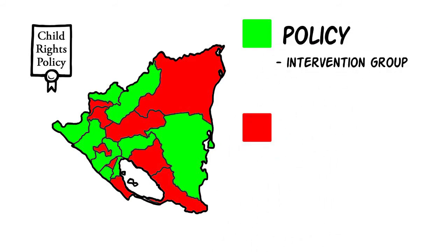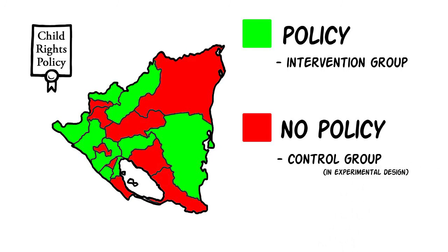In an experimental design, such group is known as the control group, and in a quasi-experimental design, it's called a comparison group.